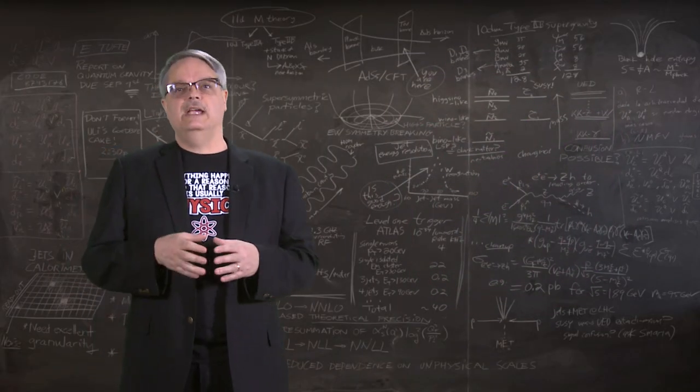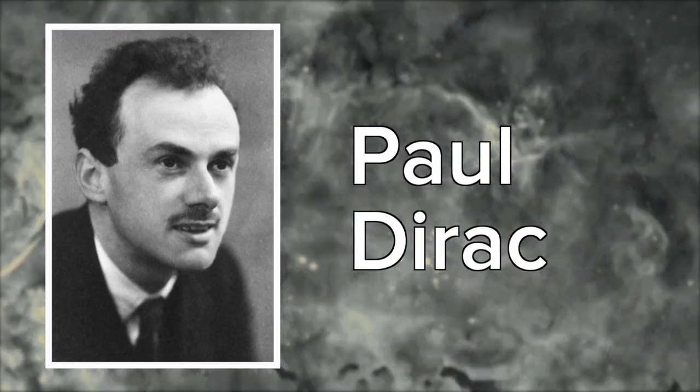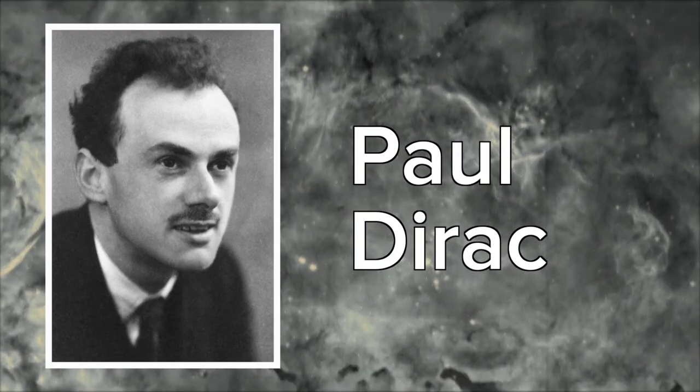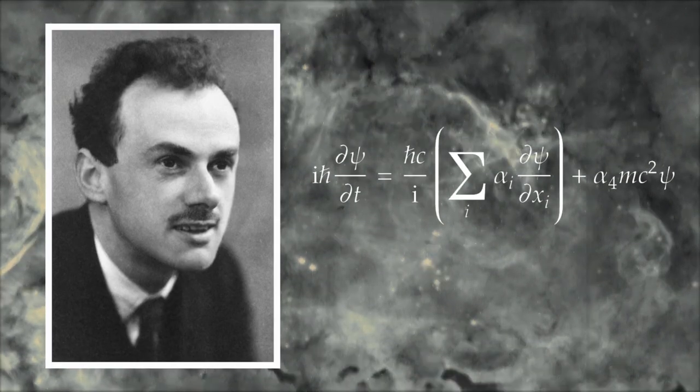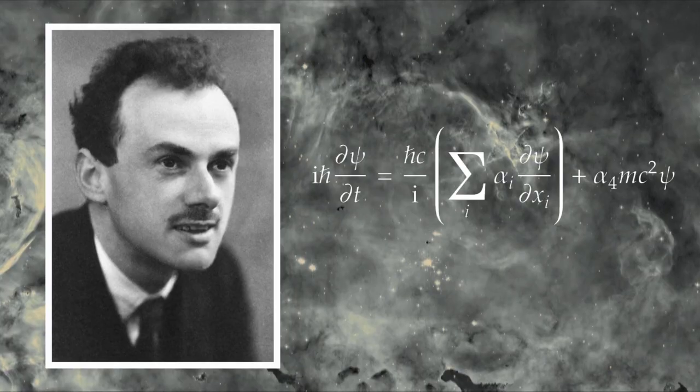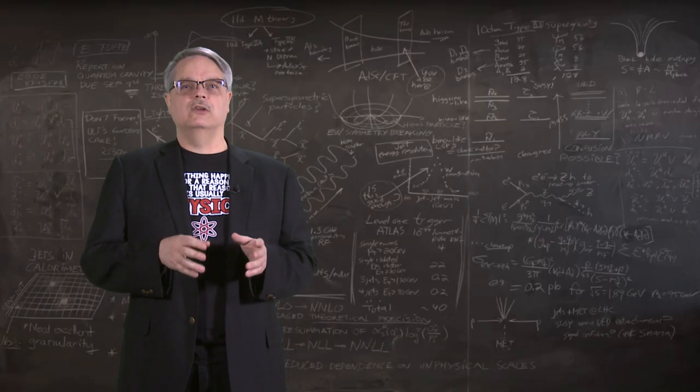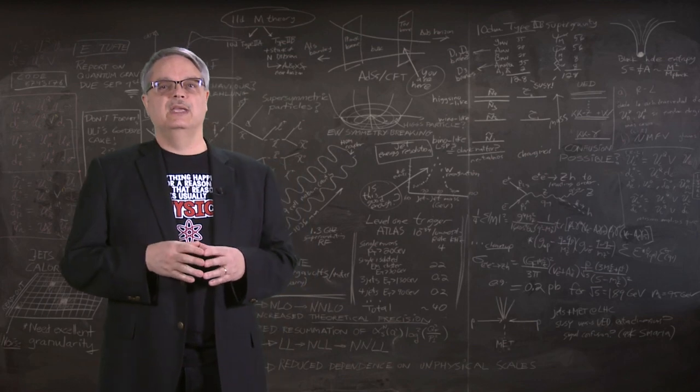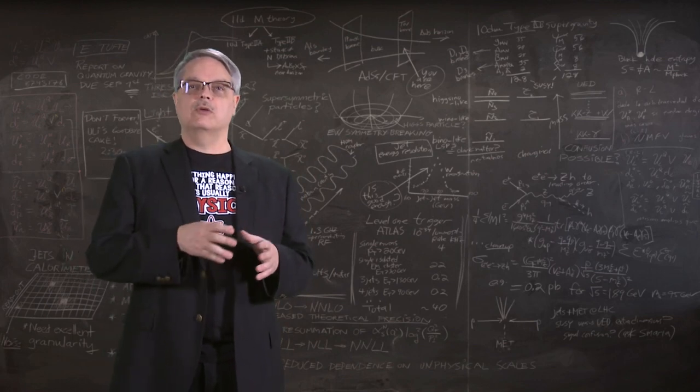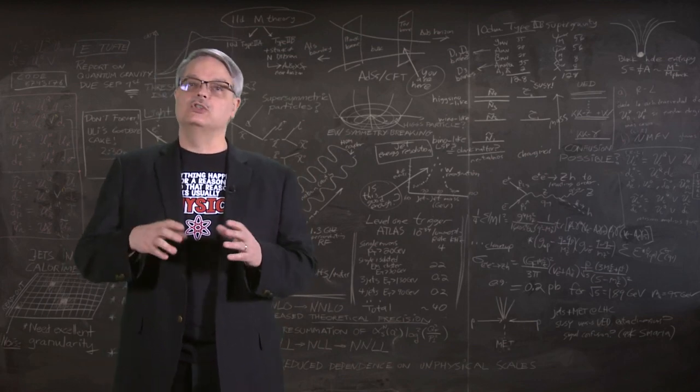However, things changed in the late 1920s when Paul Dirac started puttering around with quantum mechanics. One thing he did was successfully merge quantum mechanics and Einstein's theory of special relativity. Another thing he spearheaded was a way to figure out a way to make a fully quantum theory. He did this by finding a quantum formulation of the electric field surrounding the proton.